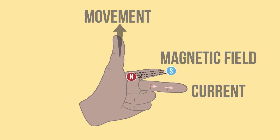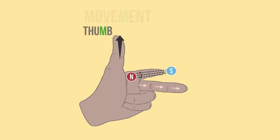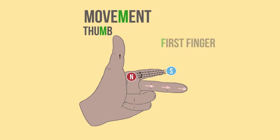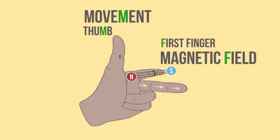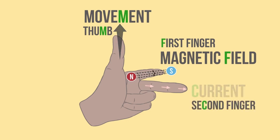Try to remember it this way. Thumb: movement. First finger: magnetic field. And, second finger: current.